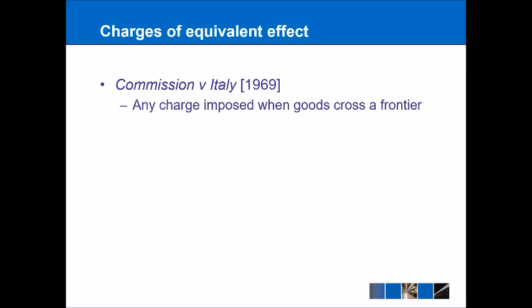One of the ways countries try to get around this is to call a customs duty something else — like a 'customs charge' or 'customs tax'. To close this loophole, the EU has said that any charge which has the equivalent effect of a customs duty will not be allowed. In Commission v Italy 1969, the Court held that any charge imposed when goods cross a frontier will effectively fall under Article 30 and will not be allowed — it doesn't matter what they call the charge. If the charge is applied when goods cross a boundary from one country to another, it falls under Article 30 and is banned.